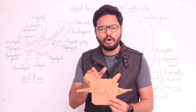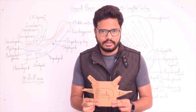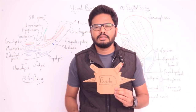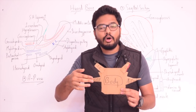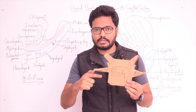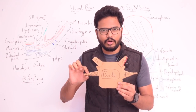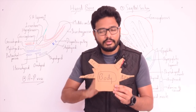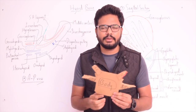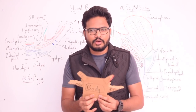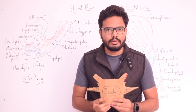The hyoid bone has a body and two pairs of cornua or horns — the lesser horns and the greater horns. It's a U-shaped structure. The body has an anterior surface, a posterior surface, an upper border, and a lower border. For the greater horns, we have an upper surface and a lower surface, and a lateral border and a medial border — this distinction is very important.